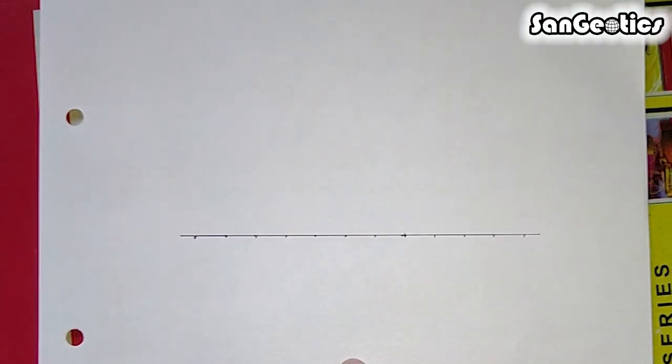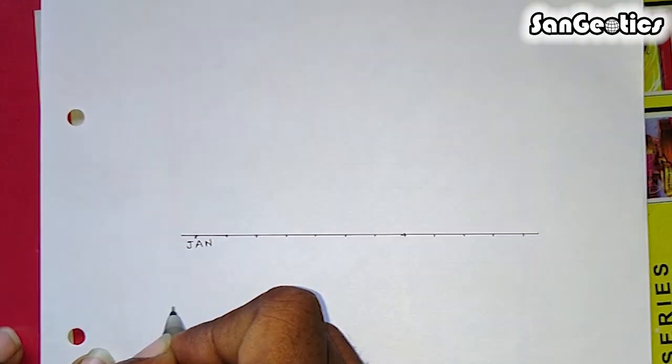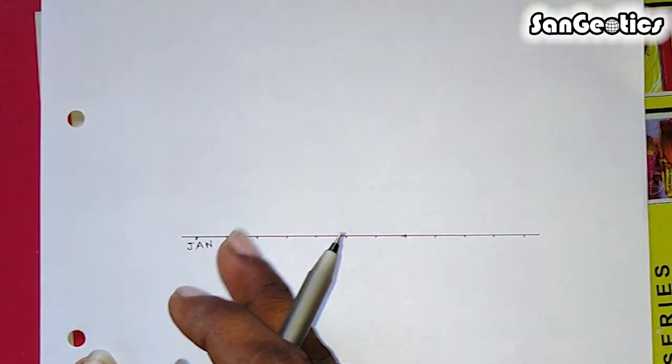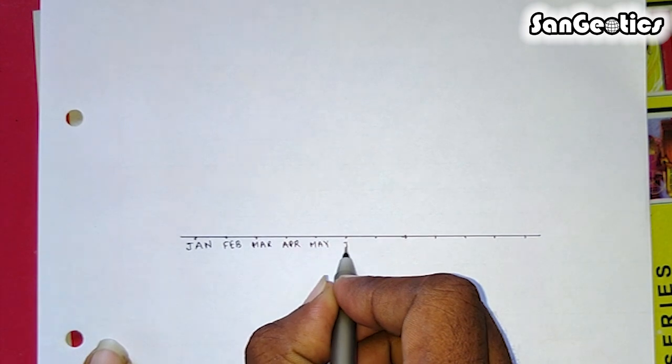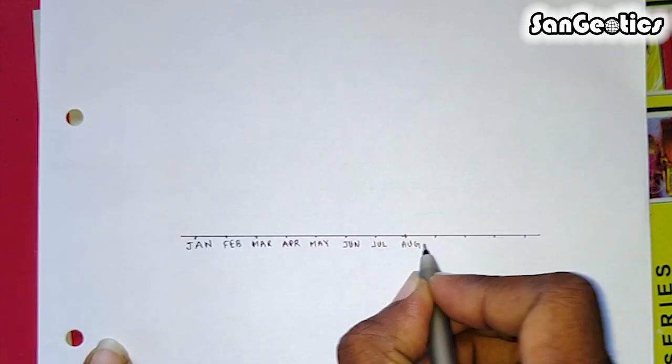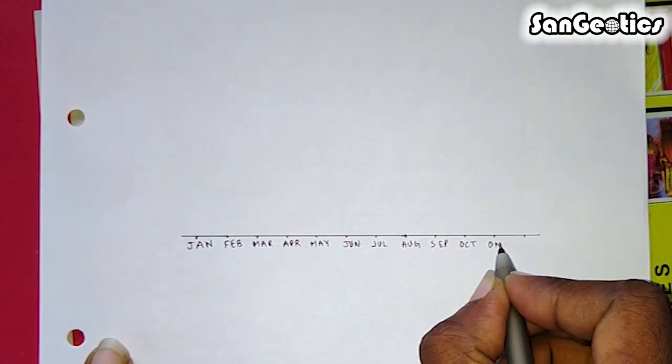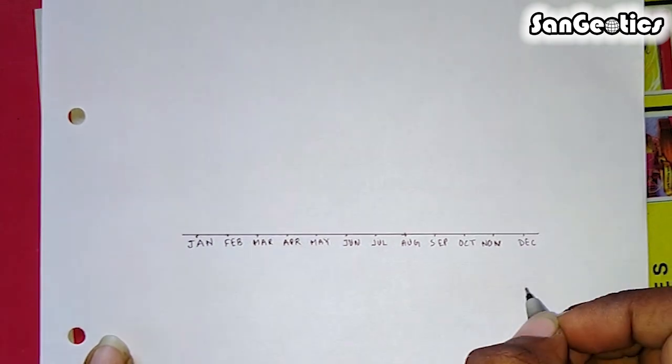Remember to start in January if you are plotting data collected in the northern hemisphere, or in July if the data is from the southern hemisphere. Then label the months on the x-axis.